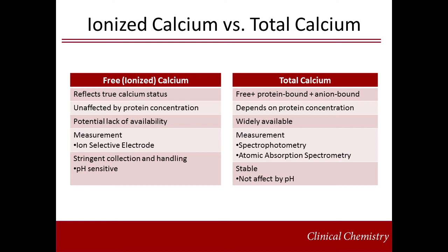Free calcium measurement has quite stringent collection and handling requirements, which is often cited as the reason it is not used universally. In contrast, total calcium includes free, anion-bound, and protein-bound calcium, and is thus dependent on protein concentration. Samples with high protein concentrations will typically have higher calcium concentrations regardless of the free calcium status of the patient. Total calcium measurement is widely available on most chemistry analyzers and is part of the routine metabolic panel. Most chemistry analyzers rely on spectrophotometry to measure total calcium using indicator dyes, although atomic absorption spectrometry may be used in some laboratories and is considered a reference method. An advantage of total calcium is its stability, allowing it to be measured as part of a routine blood collection without any special handling or processing considerations.